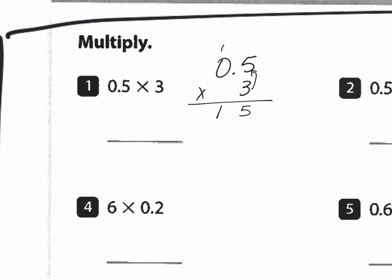Now I look back at my decimal point. I count up the spaces, the digits behind the decimal points. In this case, there's only one. There's one digit. So in my answer, I'm going to put one digit behind the decimal point, and that is going to be one and five tenths.